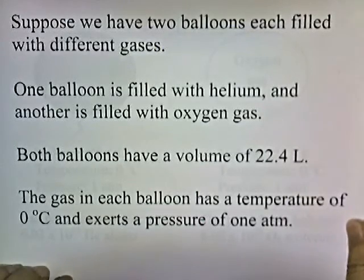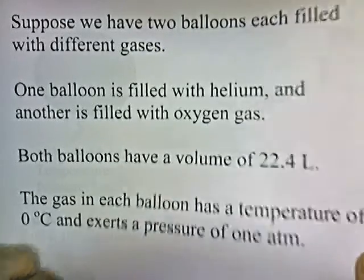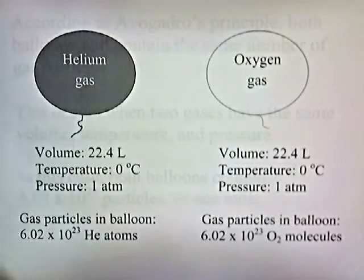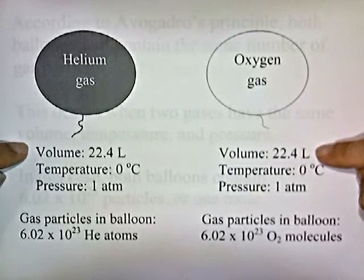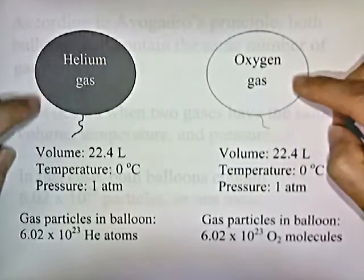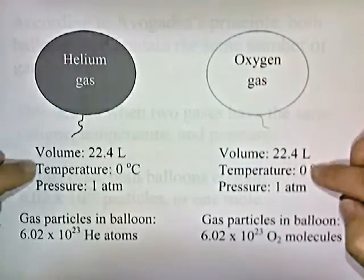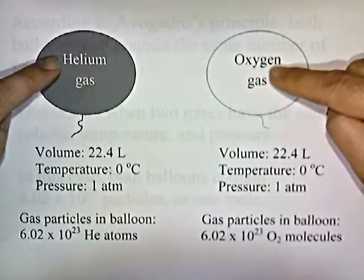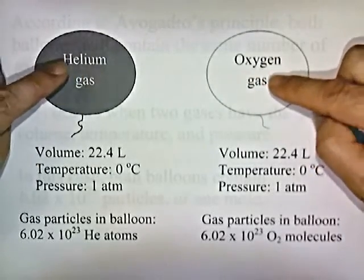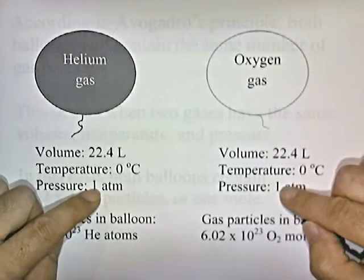Let me show you a picture of our situation with the data. Two balloons — one filled with helium gas, one filled with oxygen gas. They both have the same size: 22.4 liters. The temperature of the gas in each balloon is zero degrees, and inside the balloon they're both exerting a pressure of one atmosphere.